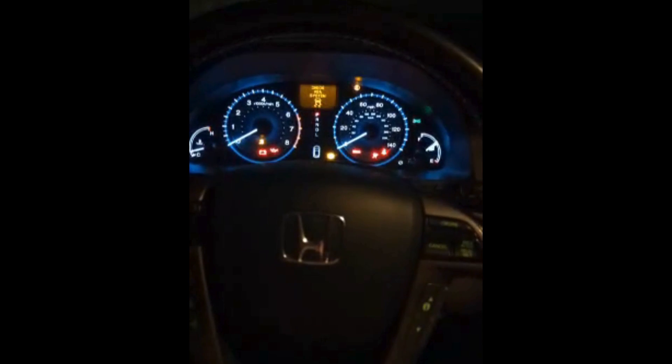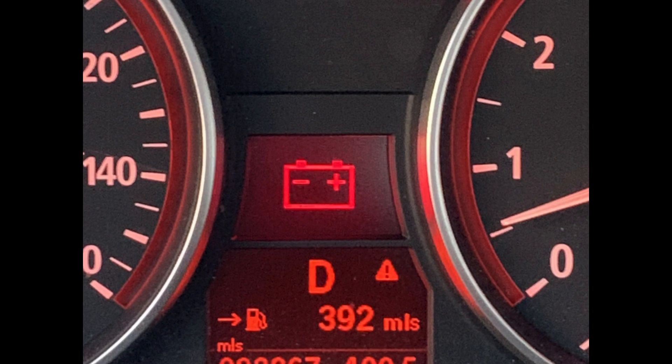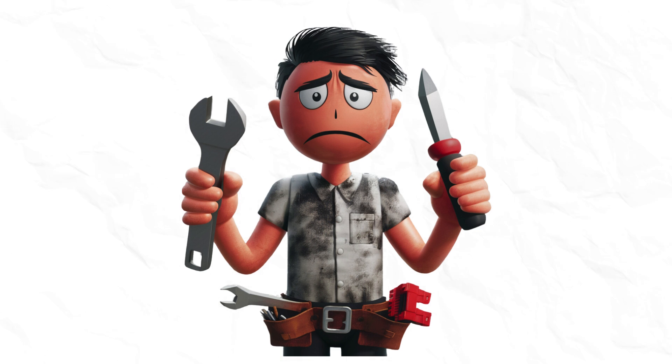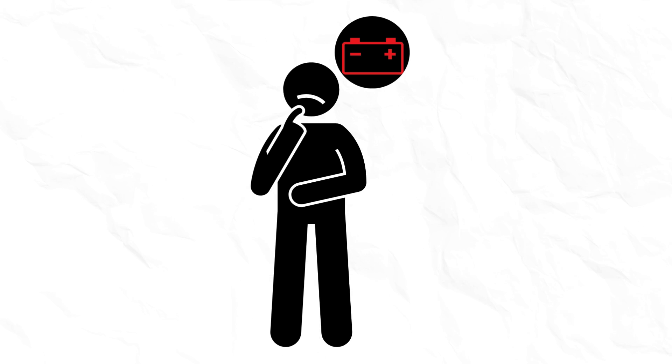Have you ever hopped in your car, turned the key, and been greeted by that dreaded battery light glaring at you from the dashboard? You know something's not right, but the alternator seems to be charging just fine. What's going on here?